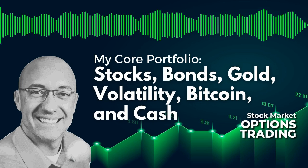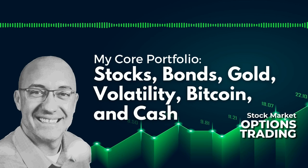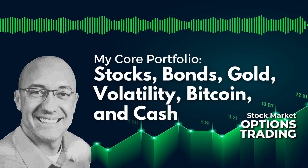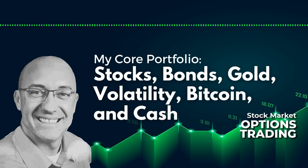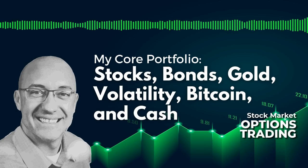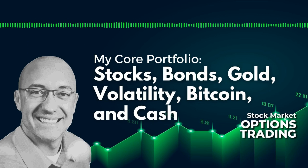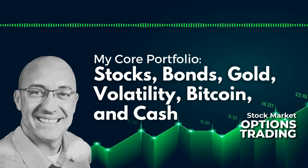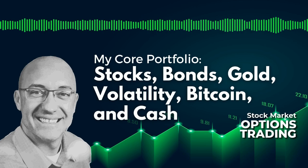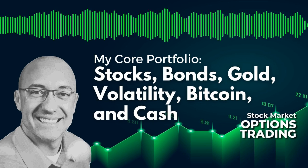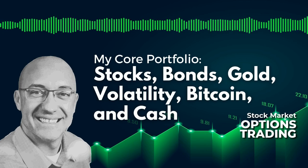We also trade the NASDAQ. Sometimes we'll do a QQQ bull call spread similar to the SPY bull call spread — I usually do one or the other. For leverage on the NASDAQ side, instead of SSO, I'll look to buy TQQQ, which is a three times bull ETF of the NASDAQ. When the NASDAQ is really leading and roaring, you can get some very good gains out of that trade. We use the same Pure Alpha trend-following system on that. So that's five main strategies for trading stocks to the long side.